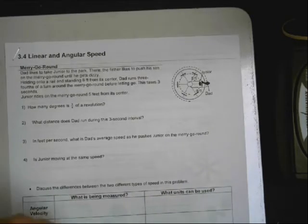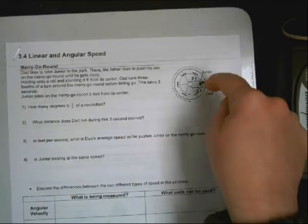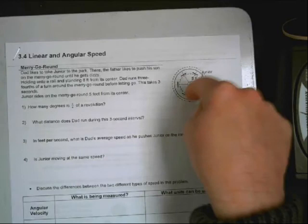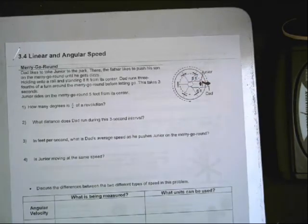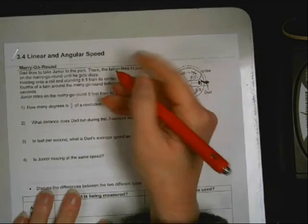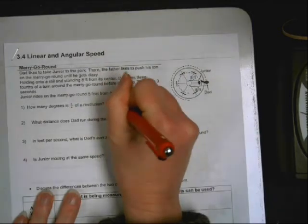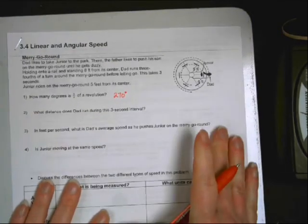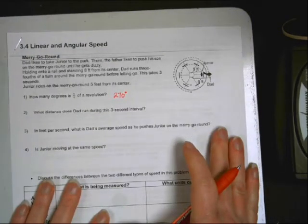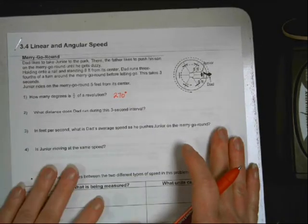Well, how many degrees is in a whole revolution? 360. And if you think about the unit circle, and you go three-quarters of the way around, how many degrees is that? 270. So, there's 270 degrees in three-quarters of a revolution. Makes sense. Makes perfect sense.